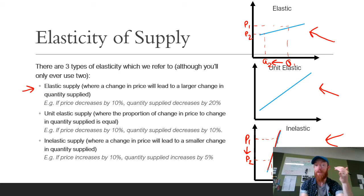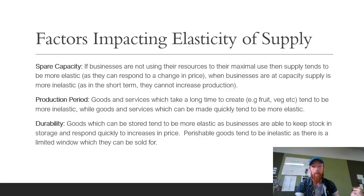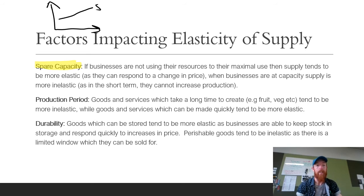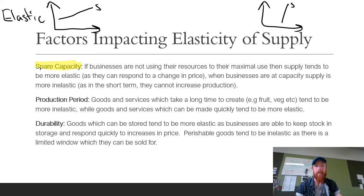The first factor for elasticity of supply is spare capacity. If there is spare capacity — meaning businesses are not using their resources to their maximum potential — supply tends to be more elastic, as businesses will be able to recruit extra resources if prices rise and produce more very quickly. If there is no spare capacity, supply is going to be inelastic because businesses, even if prices rise, are going to struggle to produce any more in the short term.